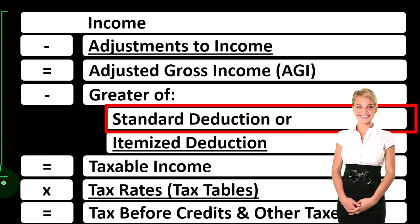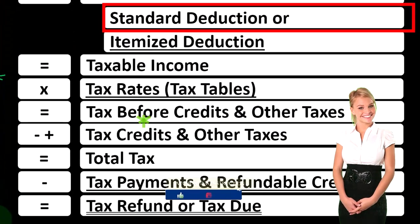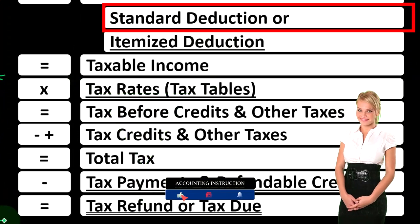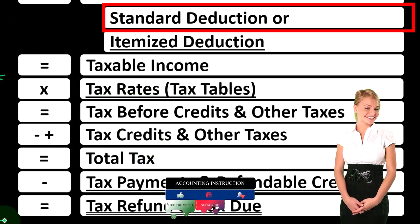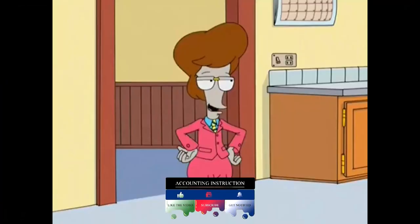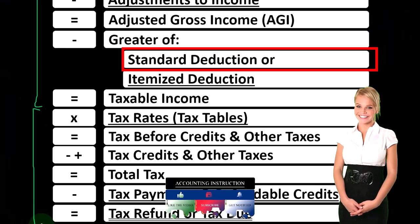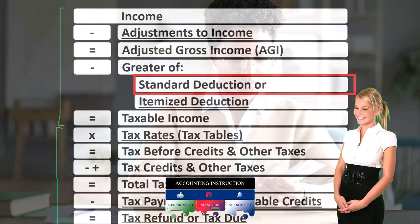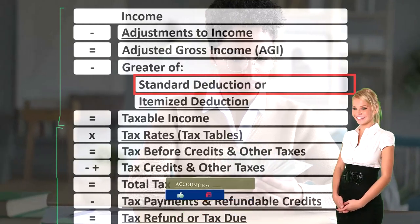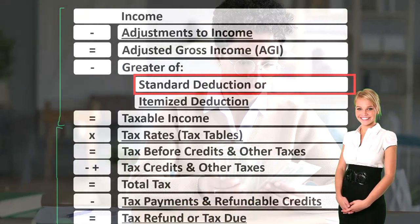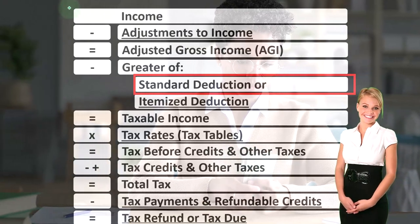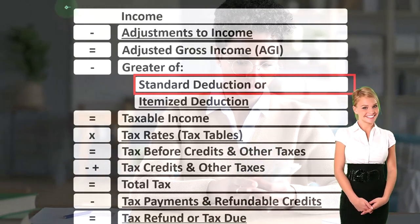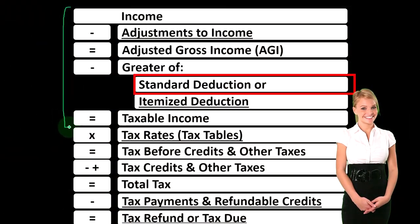The second half of the income tax equation will be calculating the income tax, applying any other taxes like self-employment tax, for example. Applying credits and payments in order to get to the refund or the amount due. We're focused here still on the top half of the equation, the income statement.